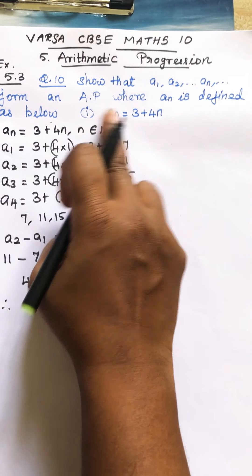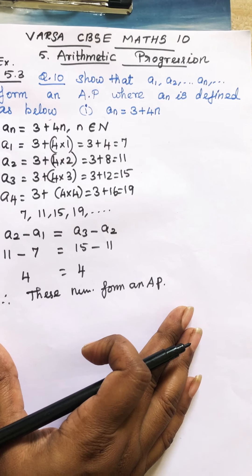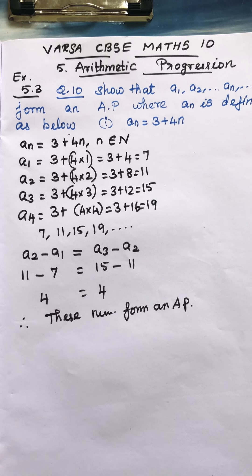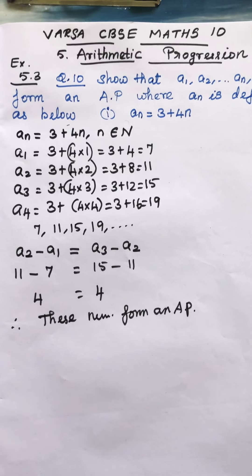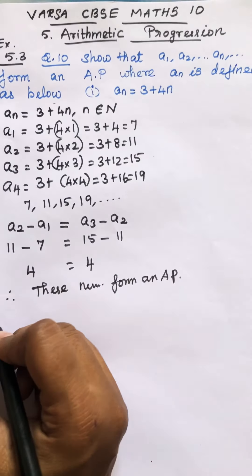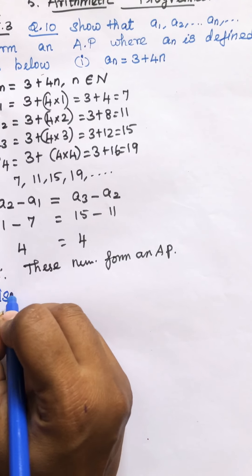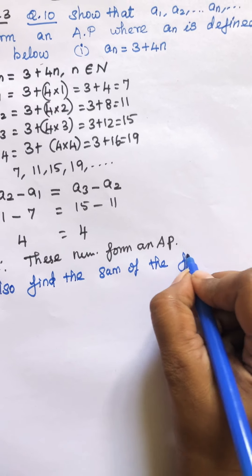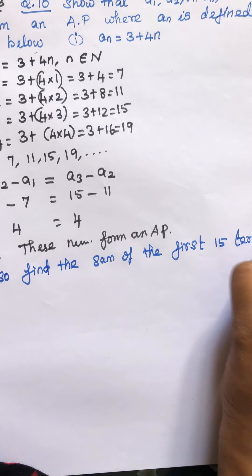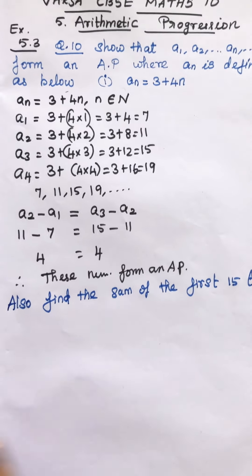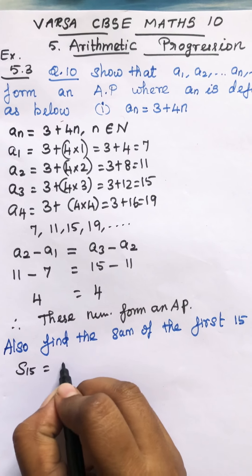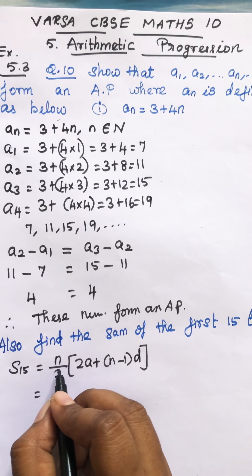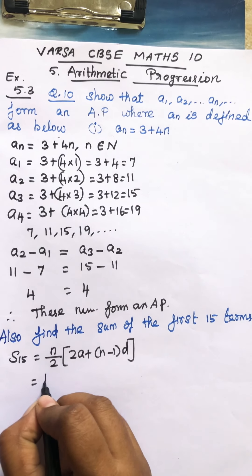What is the next question? Also find the sum of the first 15 terms in each case. So this is your question. Also find the sum of first 15 terms. So we can find. Students, is it that much difficult? So easy. We can find the sum. So what's the sum? How will you find the sum? This is S15. So what's your formula? n by 2, 2a plus n minus 1 into d. So this is your formula.